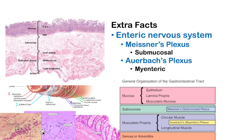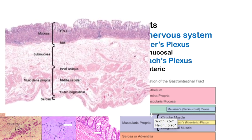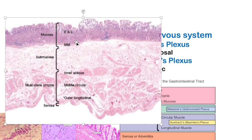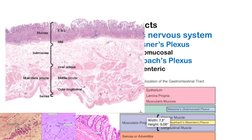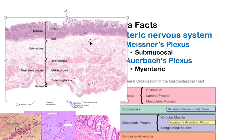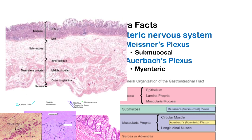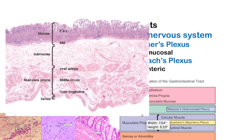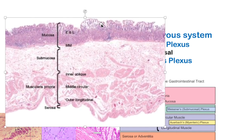Beneath the mucosa is the submucosa. The big thing to remember: this is where Meissner's nerve plexus (the submucosal nerve plexus) is located. The submucosa also contains larger blood vessels and lymphatics. The lamina propria mostly supplies the epithelium, while the submucosa has the bigger arterial and venous structures.